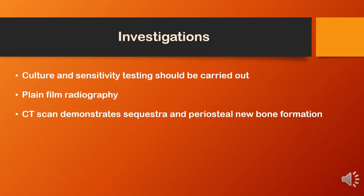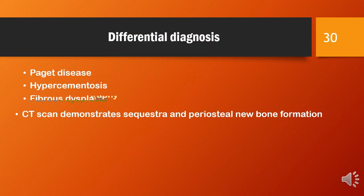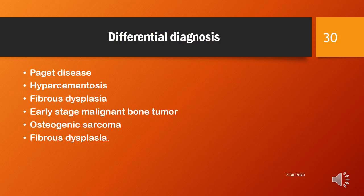Coming to the investigations, culture and sensitivity testing should be carried out. Plain-film radiography includes periapical radiography, occlusal radiograph, and panoramic radiograph. CT scan demonstrates formation of sequestrum and periosteal new bone formation. Coming to the differential diagnosis: Paget's disease, hypercementosis, fibrous dysplasia, malignant bone tumors including osteogenic sarcoma, and fibrous dysplasia.